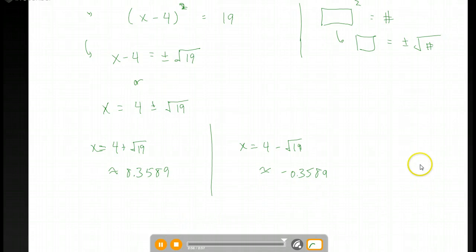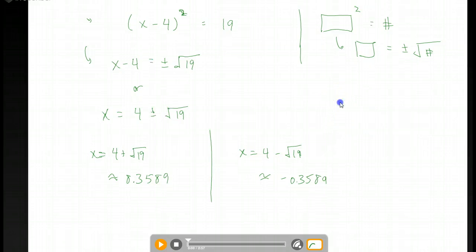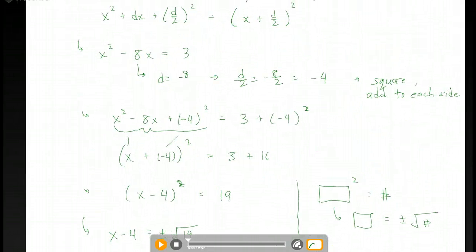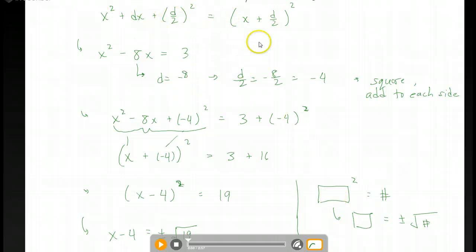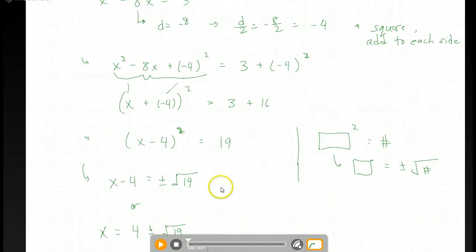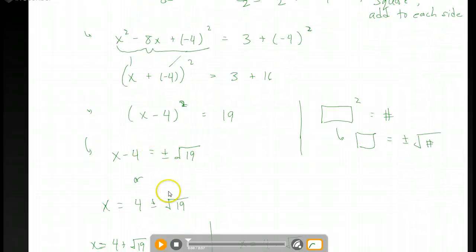So again, that's how to solve by completing the square. The main thing is you need to have the coefficient of x squared being 1 to use this key identity. In this case, it was. We didn't have to divide by the coefficient of x squared and make it 1. And then we use our identity. Eventually, we solve the equation by using the square root property. Just don't forget the plus and minus sign.